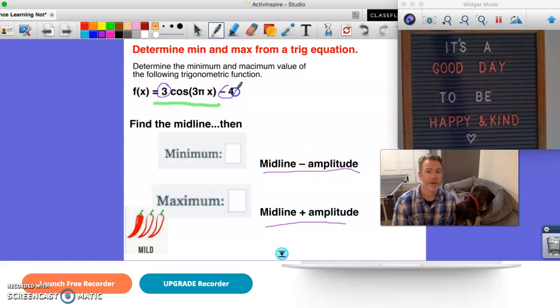So we do have to identify some features. A couple important numbers are here and here. These things are midlines and amplitudes. The first one is your amplitude. And then the next one is your midline.